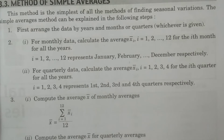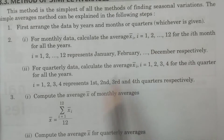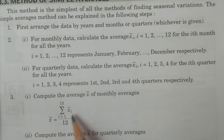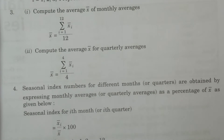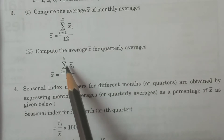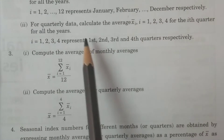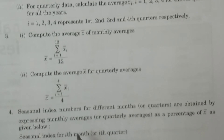The next step is to compute the overall mean x̄. For monthly data, x̄ = (Σᵢ₌₁¹² x̄ᵢ) / 12 — the average of all 12 monthly averages. Similarly for quarterly data, x̄ = (Σᵢ₌₁⁴ x̄ᵢ) / 4 — the average of the four quarterly averages.